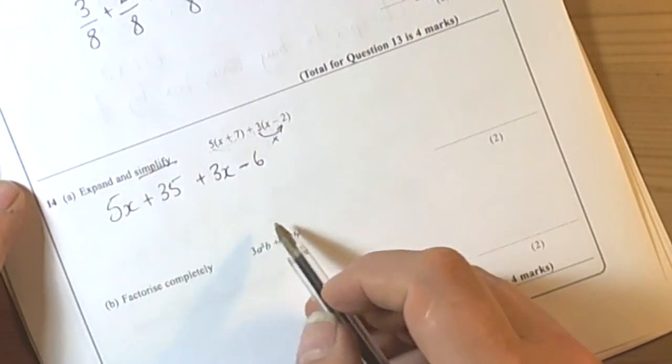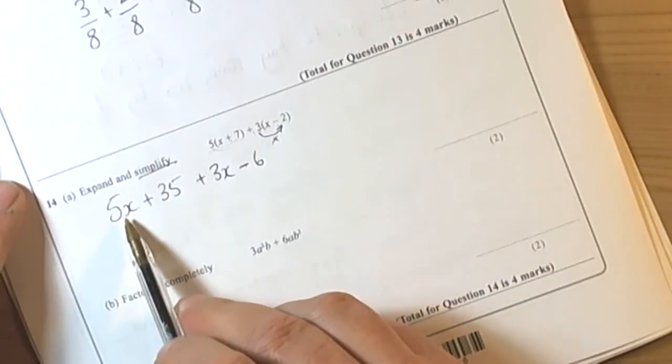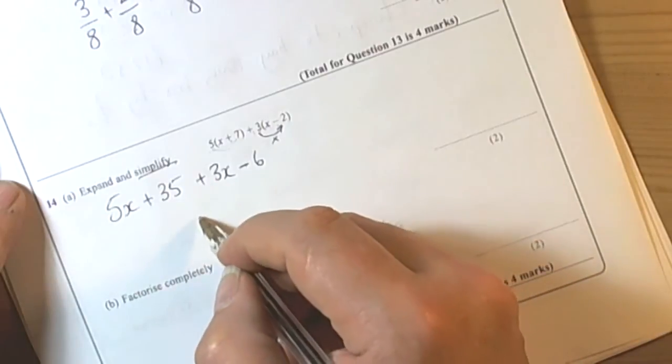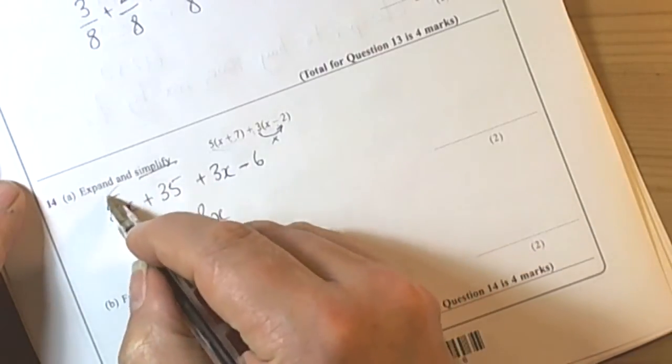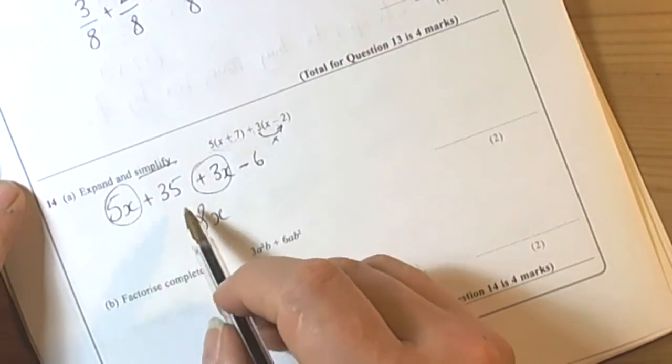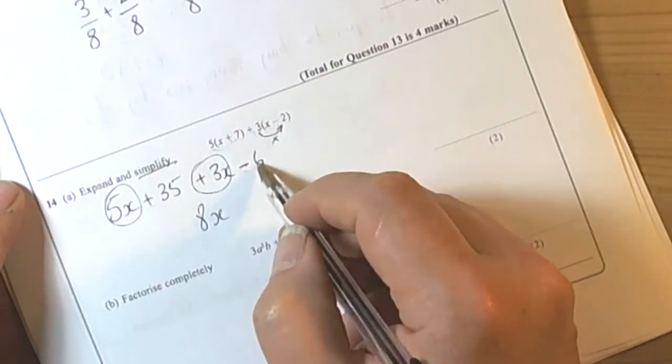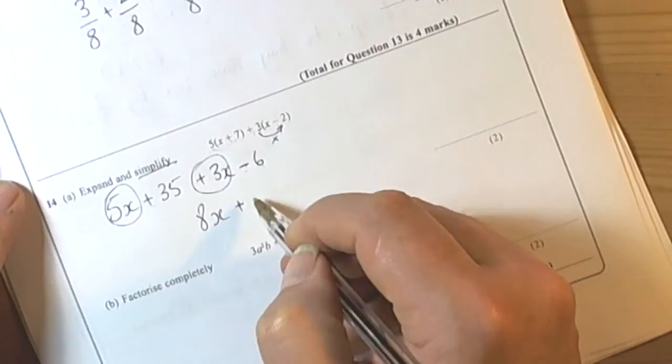Question said simplify, so we've got to be really careful that we finish off looking to see if there's any like terms that can come together. So we've got 5x plus 3x which is 8x, and then we've got 35 take away 6, so 35 take away 6 is 29, plus 29.